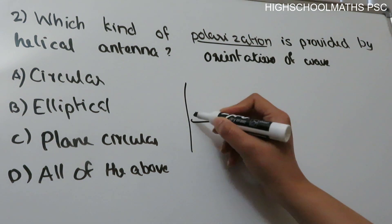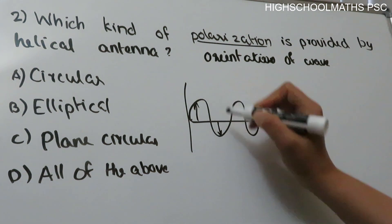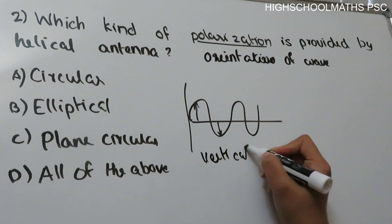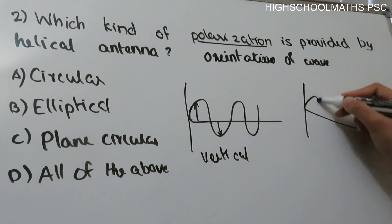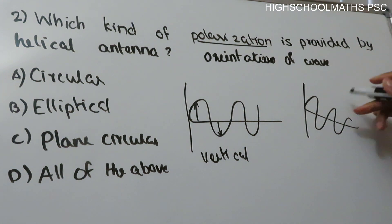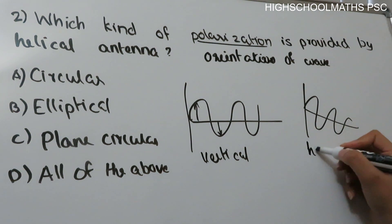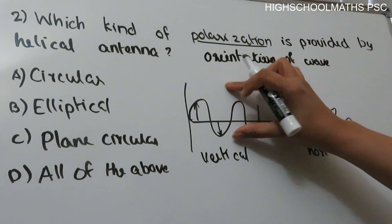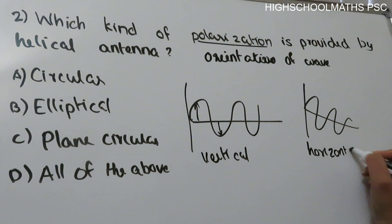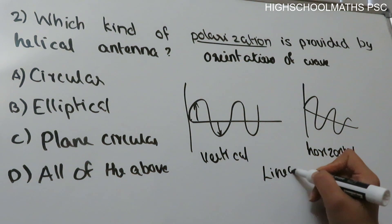If the electric field oscillates in the vertical plane, that is vertical polarization. If the movement of the wave is in the horizontal plane, that is horizontal polarization. Both vertical and horizontal polarization are types of linear polarization.